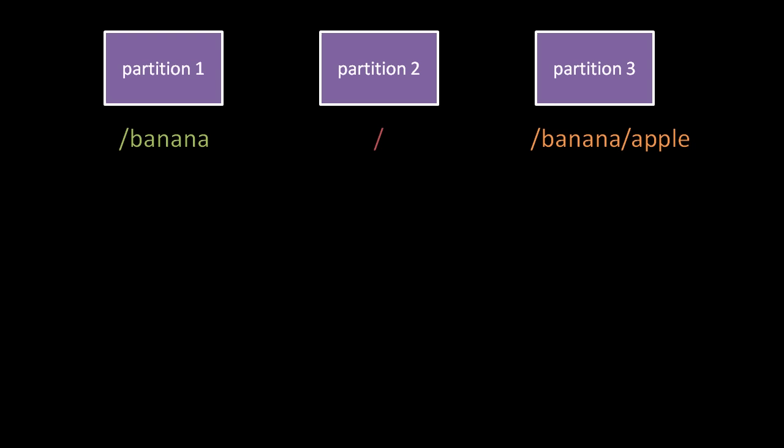Here, partition 2 is mounted to root, and then partition 1 is mounted to the directory /banana on partition 2, and in turn partition 3 is mounted to /banana/apple on partition 1. So be clear that /banana becomes synonymous with the root directory of partition 1, such that /banana/apple must refer to a directory apple in the root of partition 1.